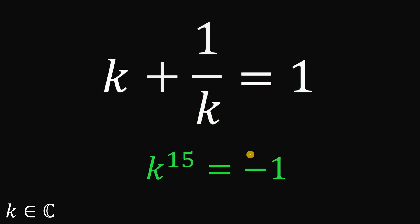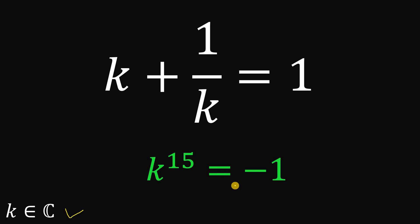And that is our answer to this question. Therefore, given that k plus 1 over k equals 1, where k is a complex number, then k raised to the power of 15 equals negative 1. And as always, we are done.